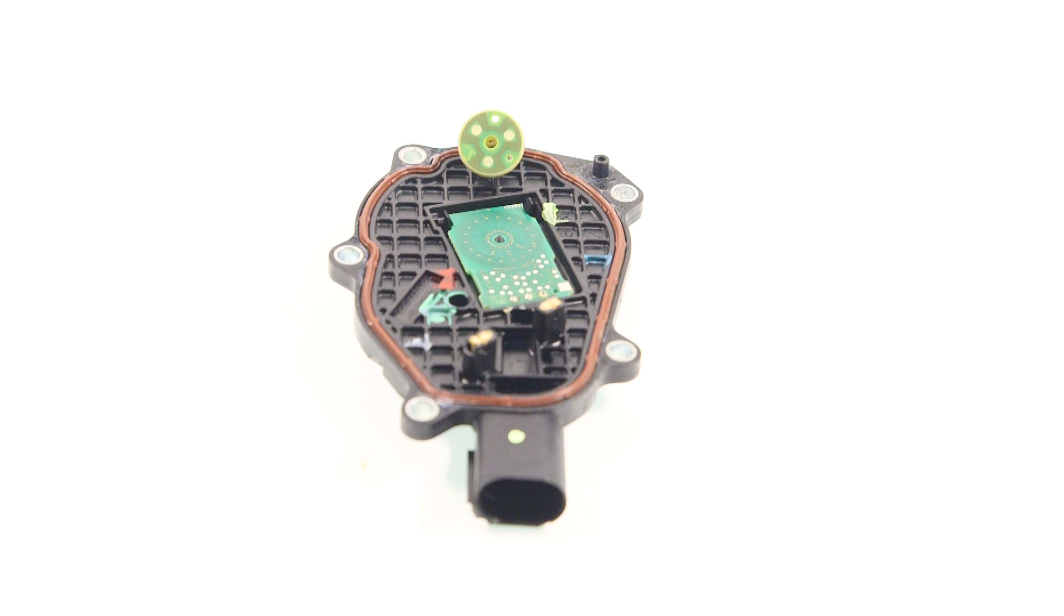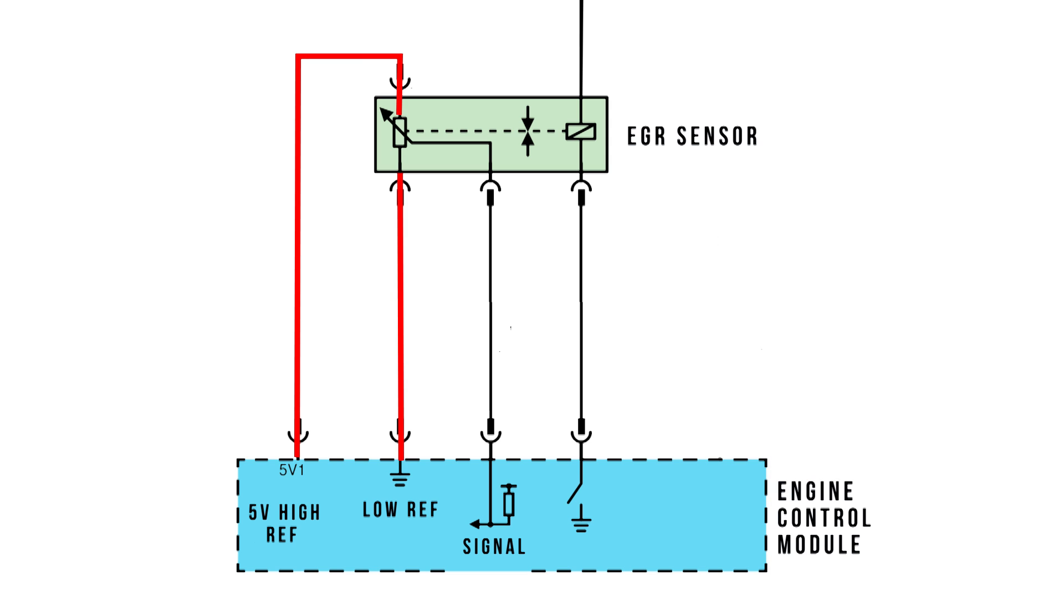The output of these sensors is similar to a potentiometer type. A high and low reference is supplied by the ECM with the signal returned in this instance to a pull-up monitored circuit.